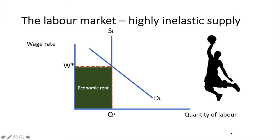Let's assume the case of an athlete with an exceptionally unique talent in basketball. They would be completely earning economic rent. If they loved the sport so much that they'd be willing to play for free, anything they earn above zero would be their economic rent and they would have zero transfer earnings. The level of demand plays a significant role in determining just how much they will earn in economic rent. It is this combination of high demand and very limited supply that explains why celebrities, athletes, and other highly sought after uniquely talented people earn so much.